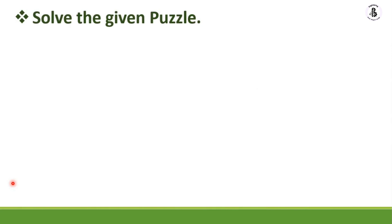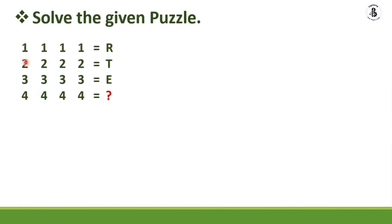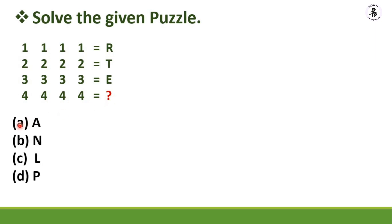Next question. Solve the given puzzle: 1, 1, 1, 1, 1 equals capital R; 2, 2, 2, 2, 2 equals capital T; 3, 3, 3, 3 equals capital E; and for 4, 4, 4, 4, 4 — what is the next? Options: Option A: capital A, Option B: capital N, Option C: capital L, Option D: capital P.